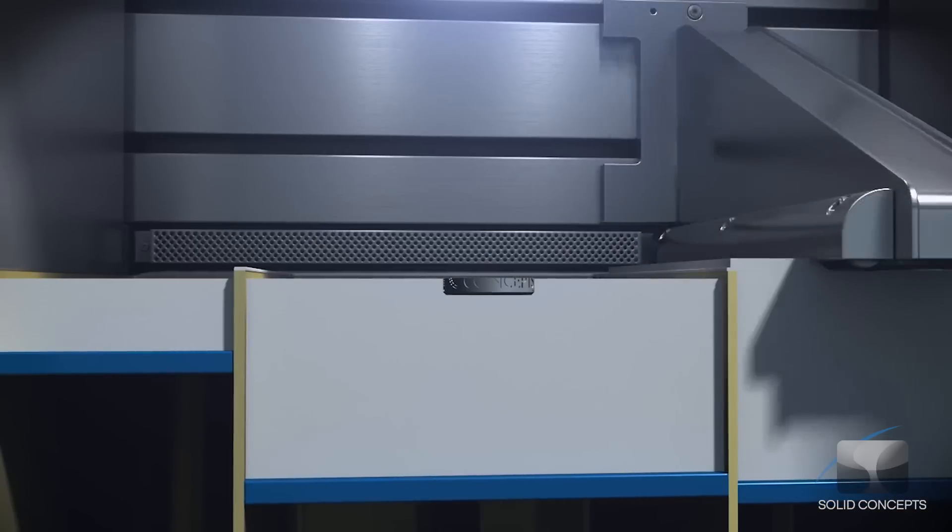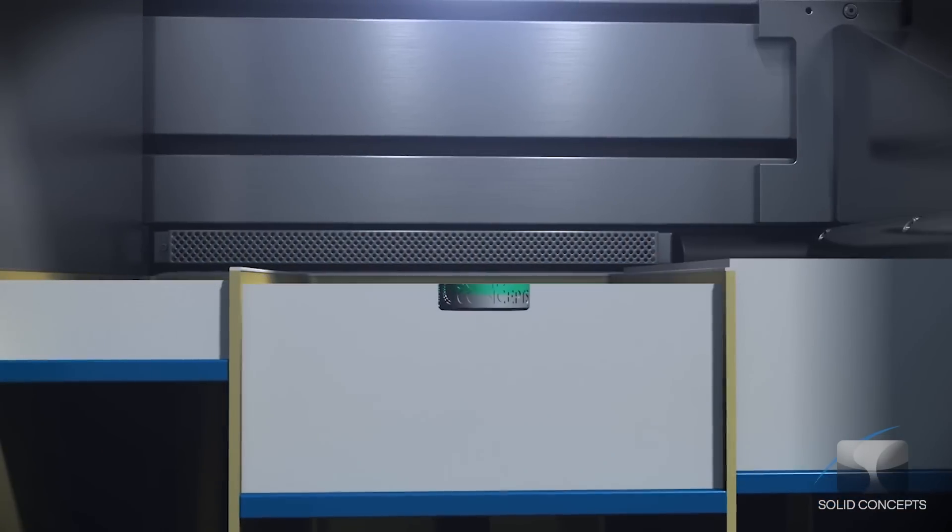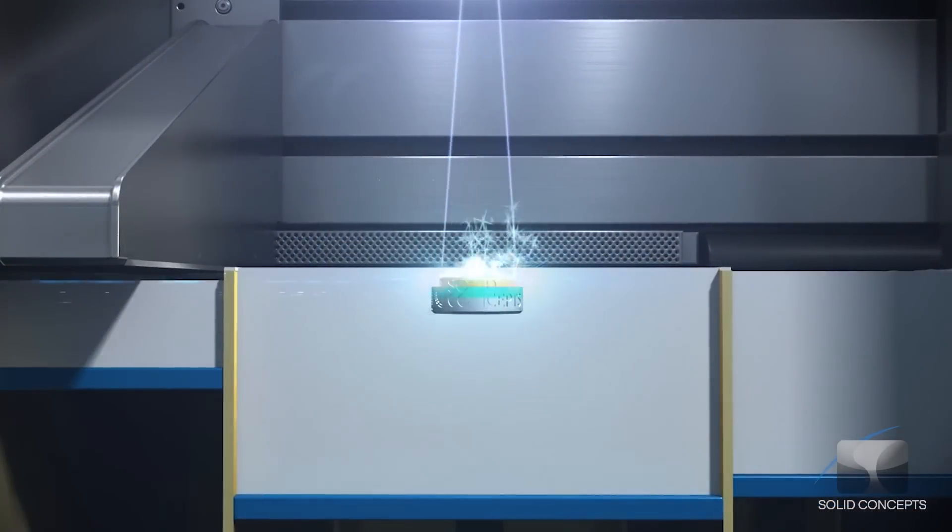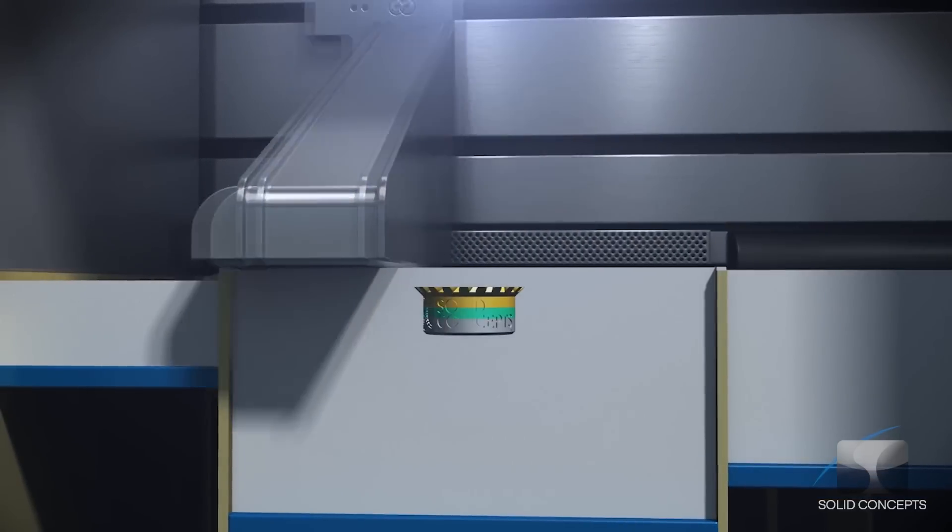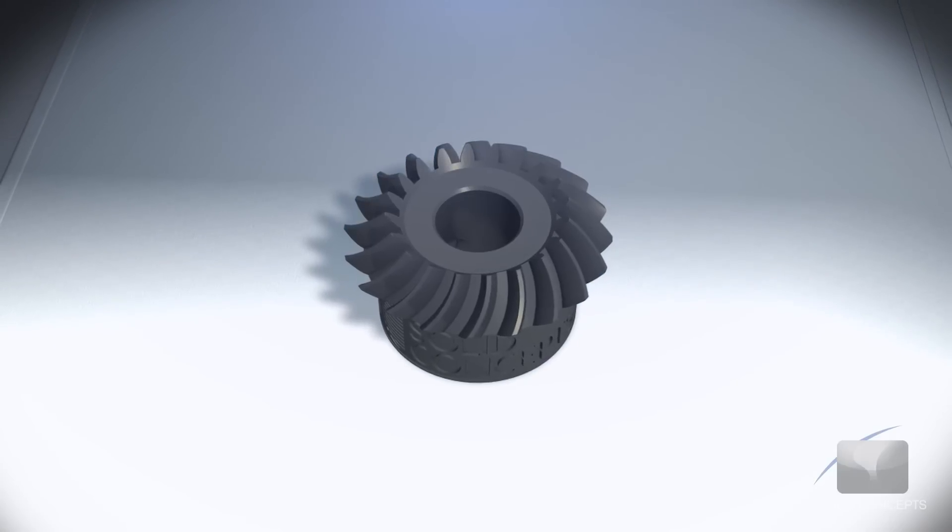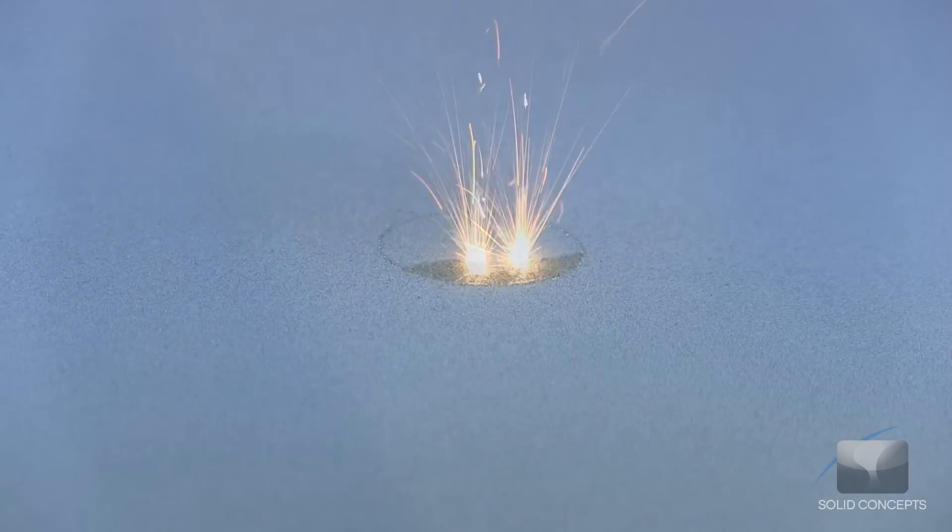Once a single layer is complete, the base plate is lowered just enough to make room for the next layer. More material is raised from the cartridge and recoated evenly upon the previously sintered layer. The DMLS machine continues to sinter layer upon layer, building from the bottom up.